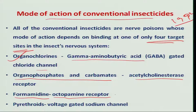The fourth target site involves pyrethroids. This group of insecticides acts mainly on the voltage-gated sodium channel. They block this particular channel, because of which the impulse cannot be transferred to the brain, hence leading to paralysis and death of the insect.